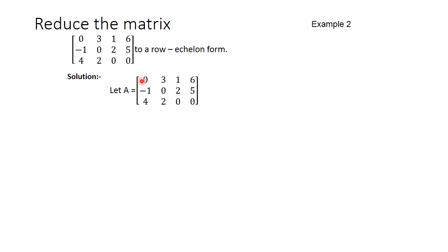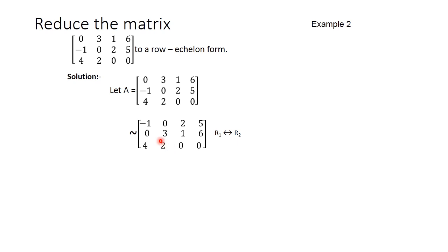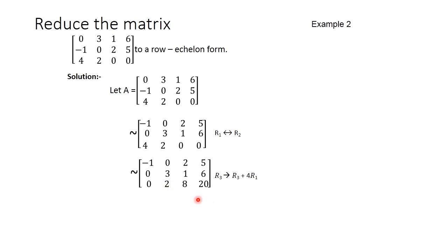The first row first element is 0, so we interchange rows 1 and 2. After interchanging, the second row first element is 0, so keep that row as it is. For R3, the first two elements need to be changed to zero. We apply the operation R3 → R3 + 4R1, which gives R3 as 0, 2, 8, 20.